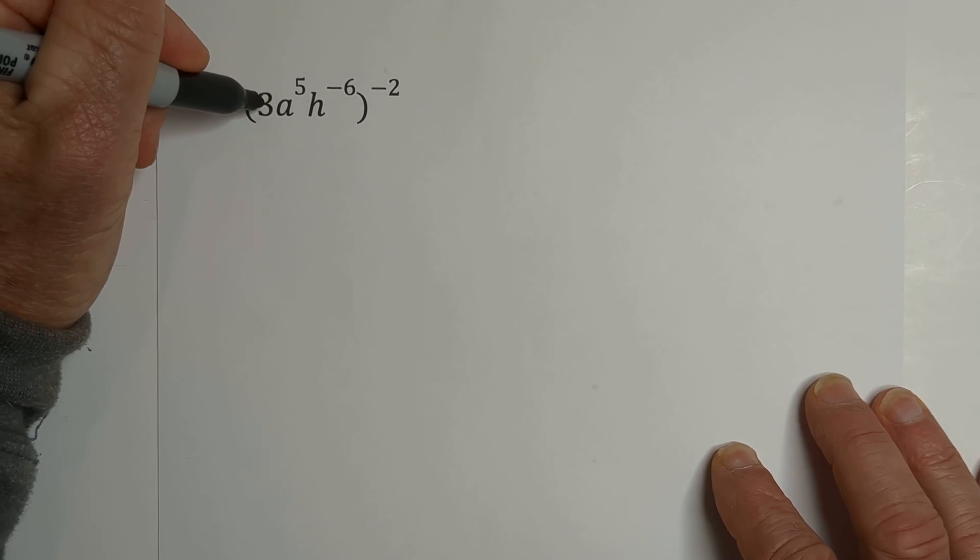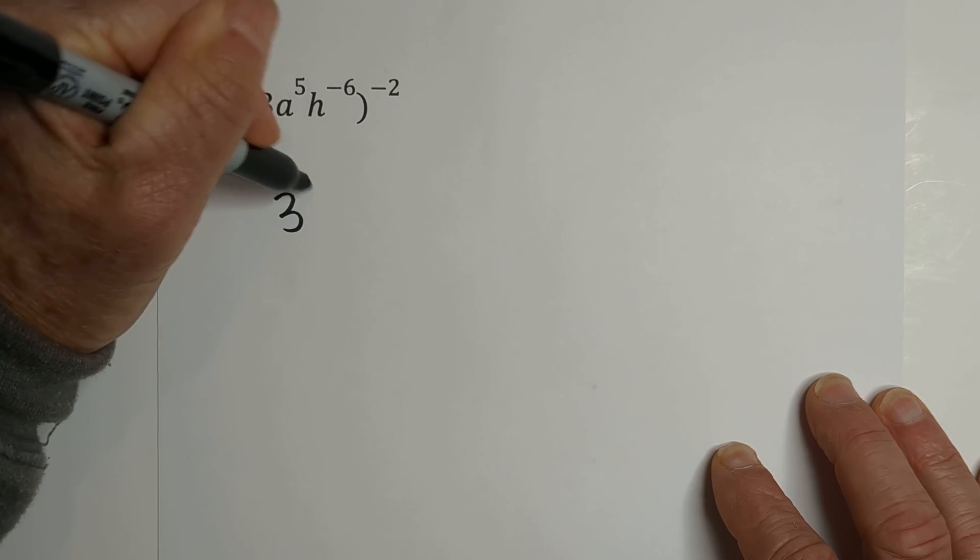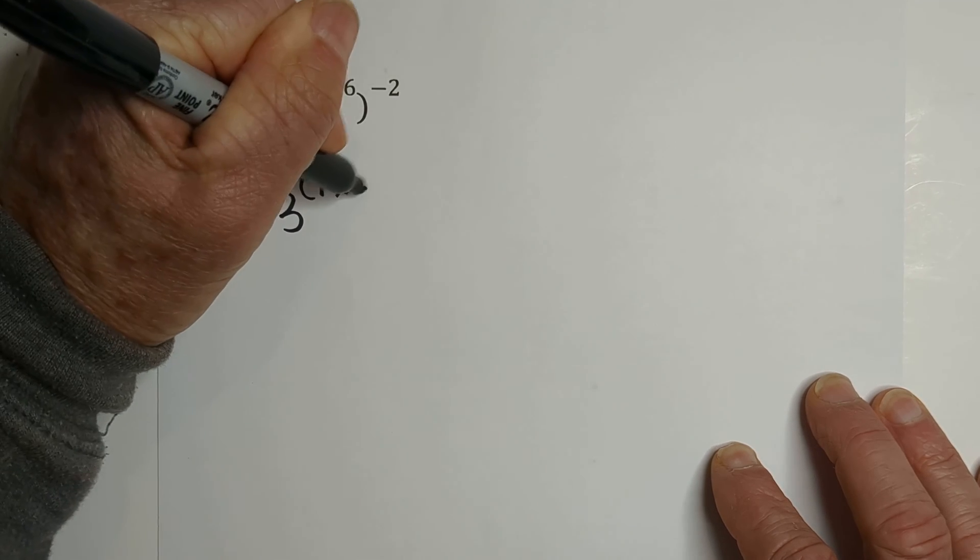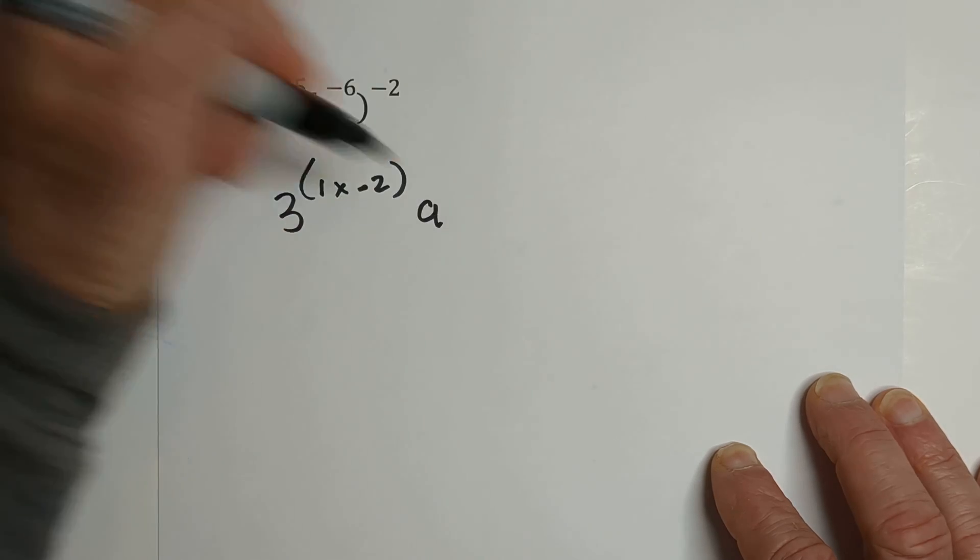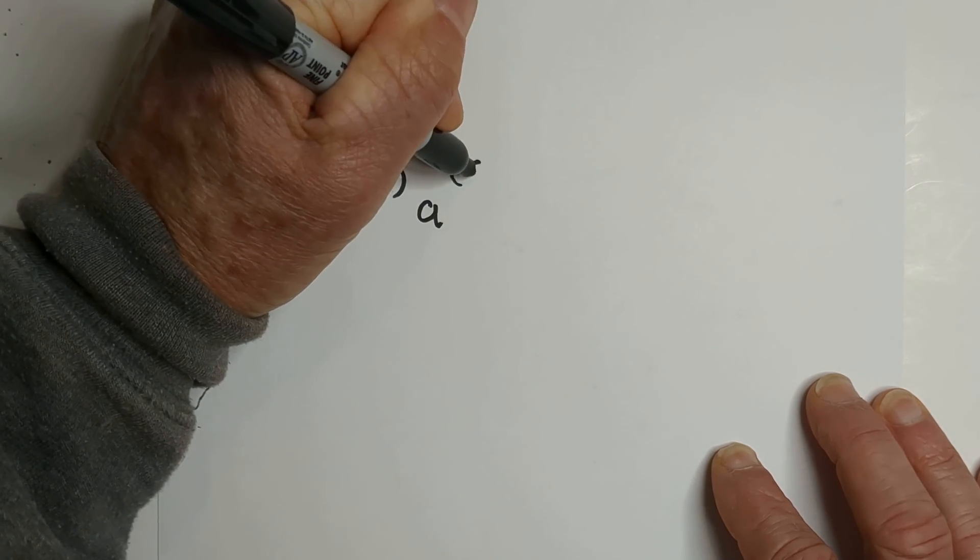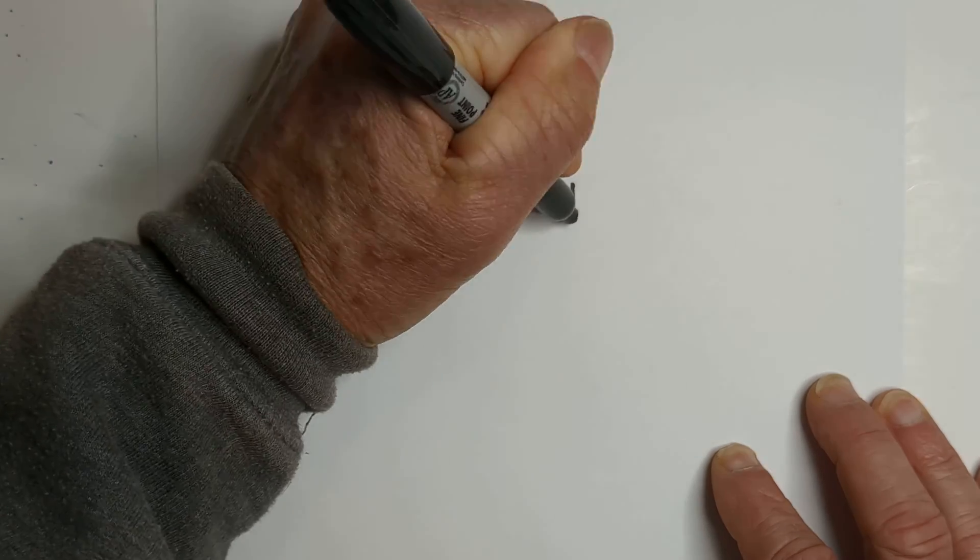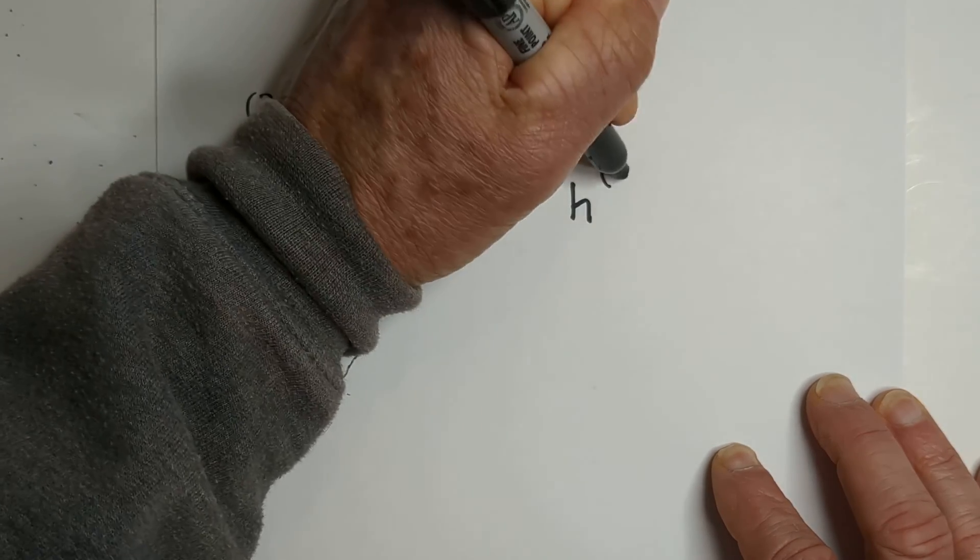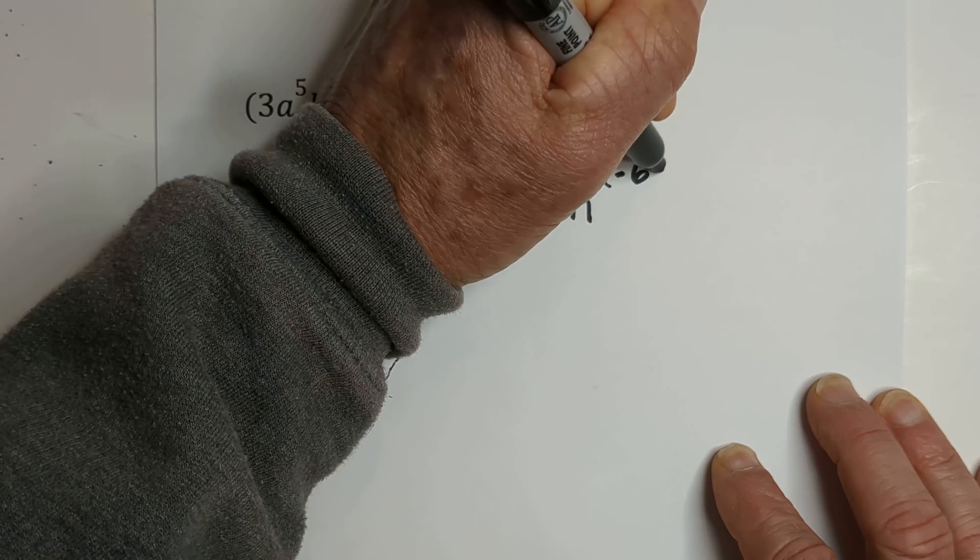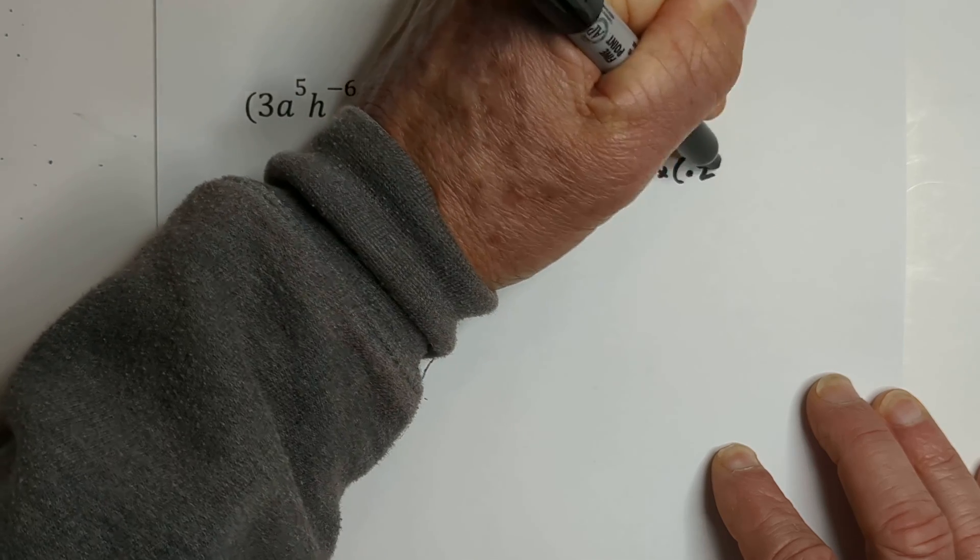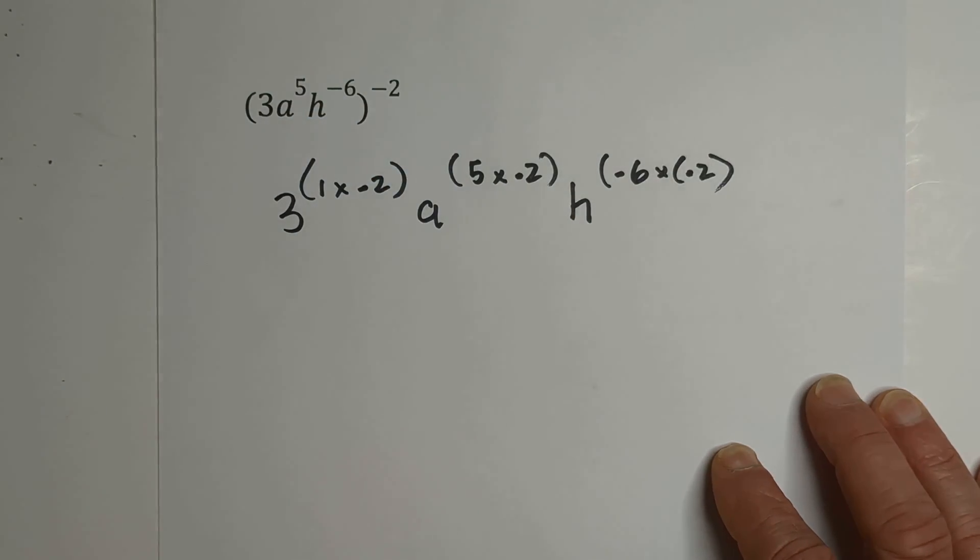So first we have 3 to the 1st times negative 2, and then we have A, and that's 5 times negative 2. And then we have H, and that's negative 6 times negative 2. Let's see what that gives us.